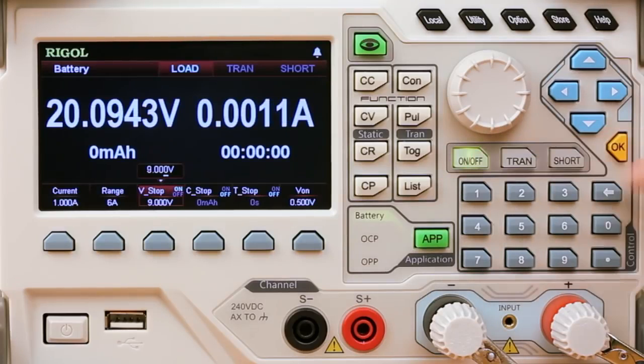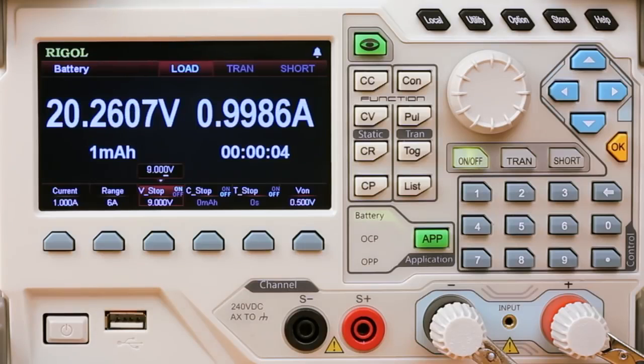Alright, let's go ahead and start this test. So we see the current ramp up to 1 amp and the voltage will start to draw down. In real time we can also measure our capacity. Here we're going at about a milliamp hour every 3 or 4 seconds. And our timing as well is listed on the display.